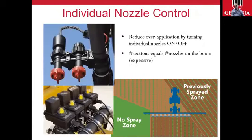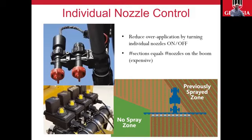A rate controller is a must-have technology — what it does is maintain your target application rate as you travel through the field. Although this technology has been a little slow to be adopted on orchard or air blast sprayers, it's still available nowadays for both boom sprayers and orchard sprayers. Section control allows us, as we're driving through previously sprayed or no-spray zones in the field, to turn different sections on and off so we're not over-applying product where it's not needed. This technology is applicable for both boom sprayers and some vertical boom or orchard sprayers where nozzles are configured into different three, five, or seven sections.